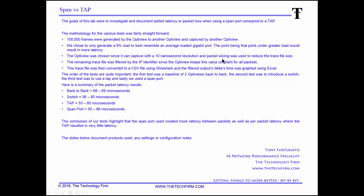I chose the OptiView because it can capture at 10 nanosecond resolution. I used some packet slicing to keep the trace file small before bringing it into Wireshark. The remaining trace file was filtered by the IP identifier — interestingly, the OptiView did not increment the IP identifier, it stayed the same number, which was fantastic for filtering. The trace file was then converted to a CSV using Wireshark and the delta time output was graphed in Excel.